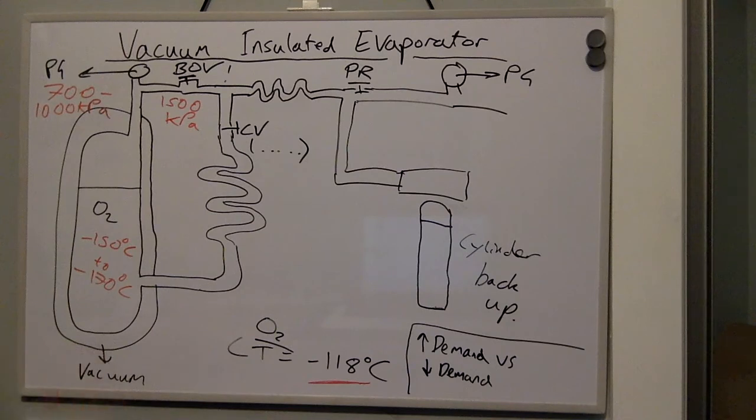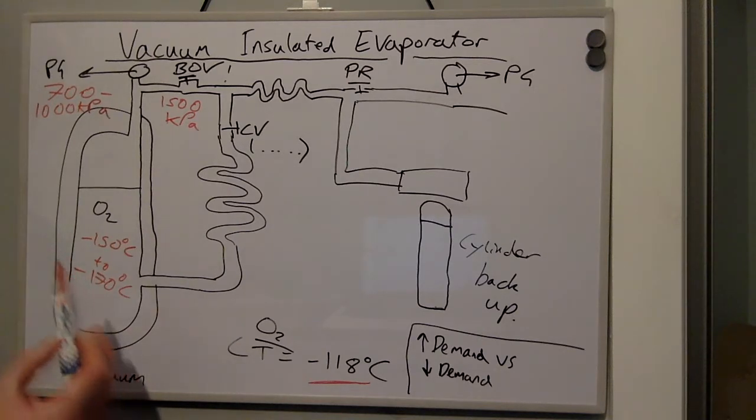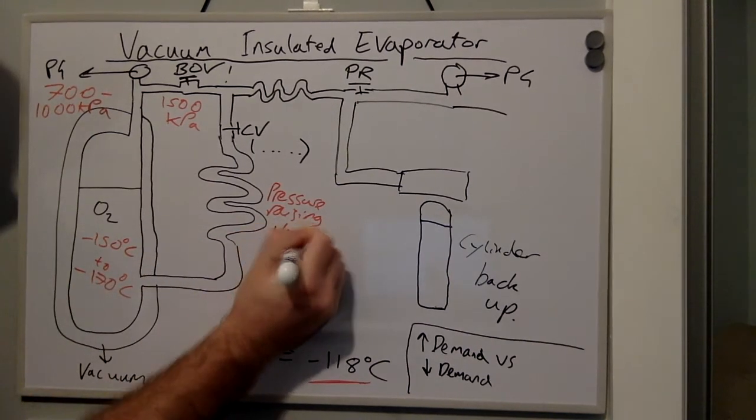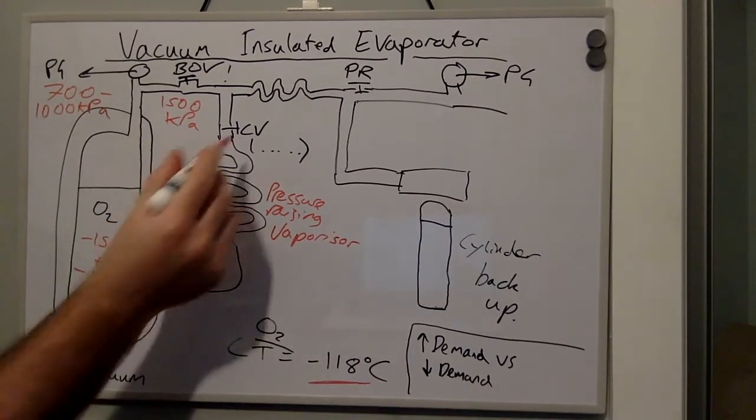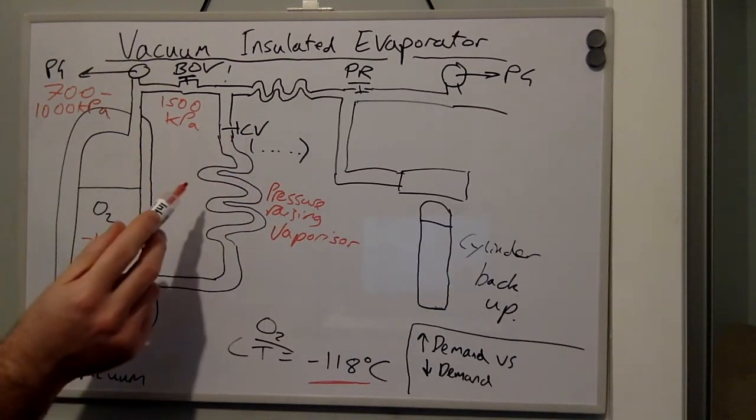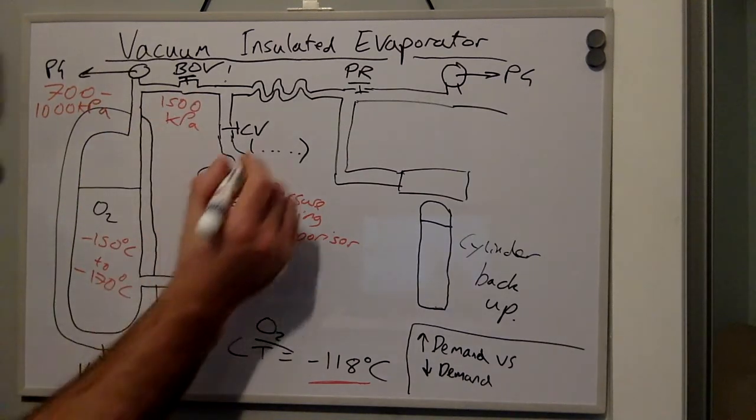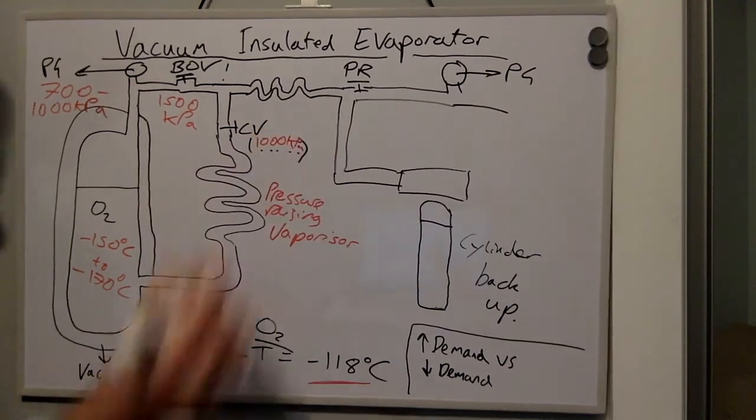This will reduce the pressure of the system. If we have a high demand, the pressure within the tank will drop. Therefore, we have a pressure raising vaporiser and a control valve that will only let the oxygen pass once a pressure of 1000 kPa has been reached.